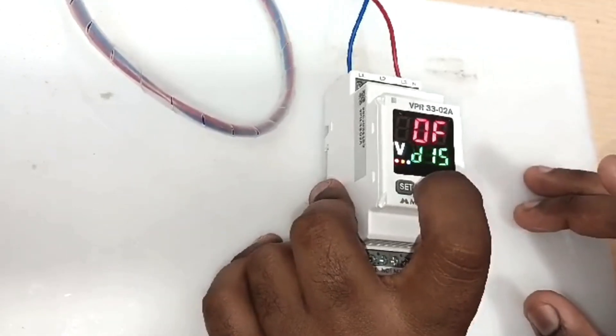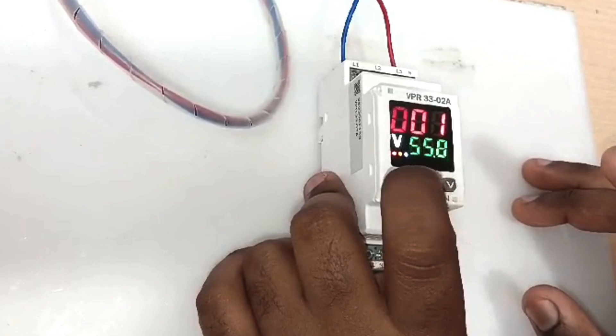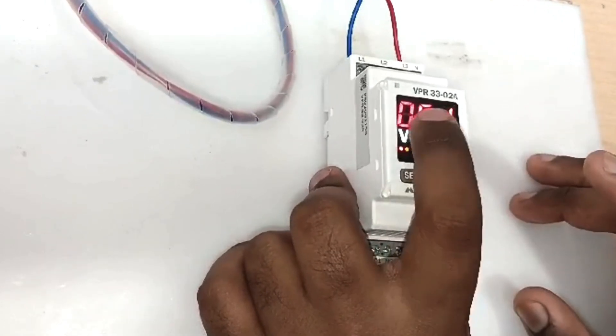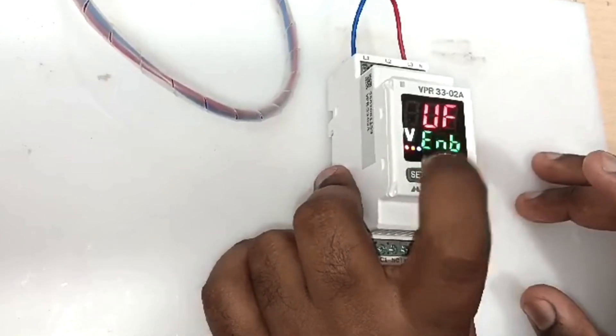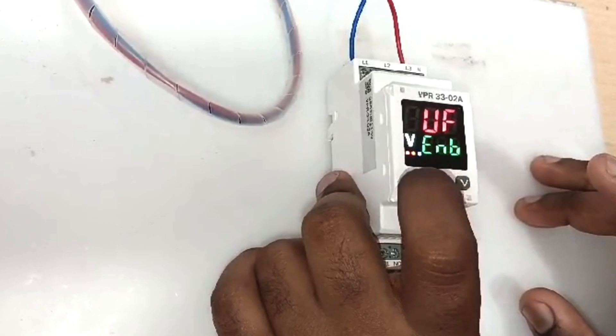Over frequency should be 55.0. Under frequency is also enabled. If you want you can disable also.